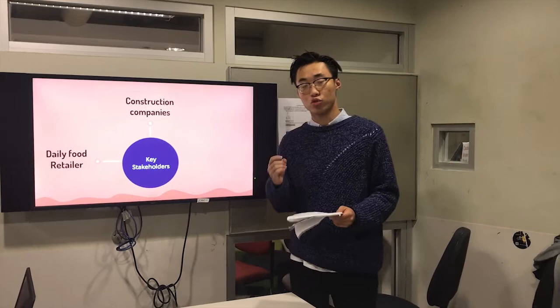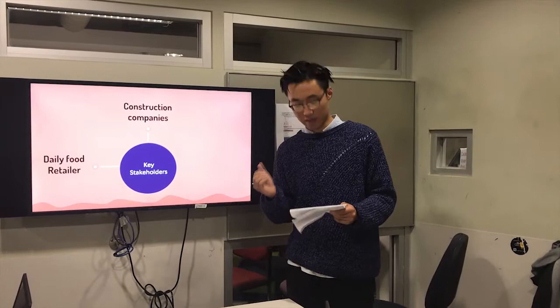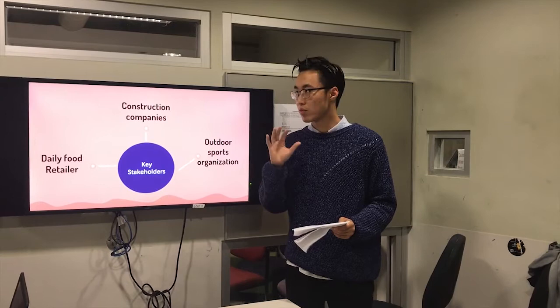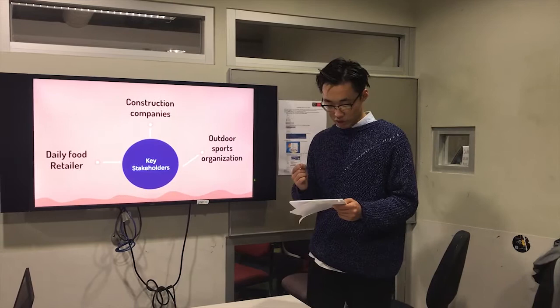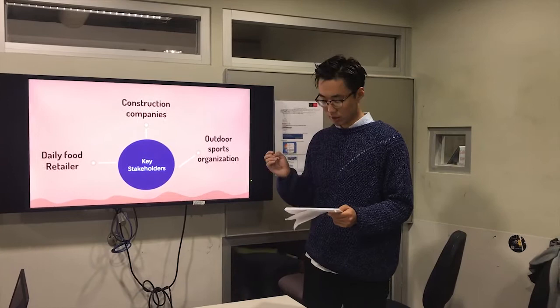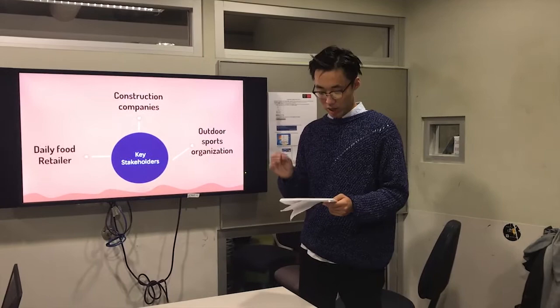The second stakeholder is construction companies. Construction companies should use environmentally friendly building materials. The third stakeholder should ensure workers avoid working long periods with hazardous chemical materials. The third stakeholder is outdoor sports organizations. All sports facilities should help construct safety shading facilities, especially for road sports and roller skating. Outdoor sports equipment such as helmets and sun protection suits will help reduce sun exposure.